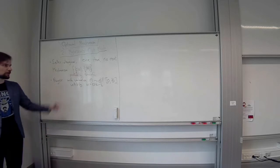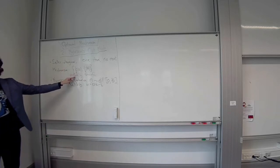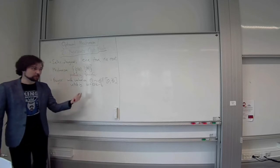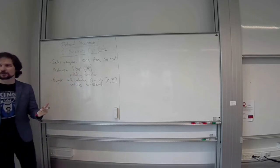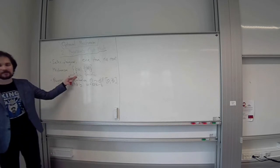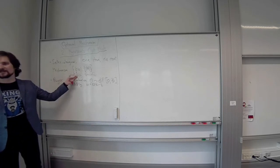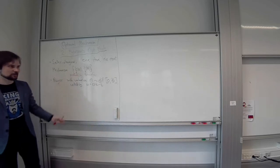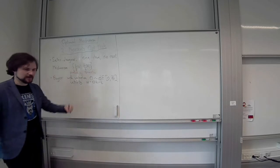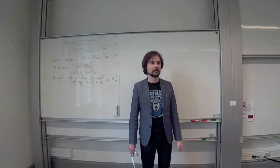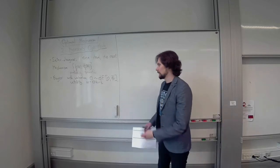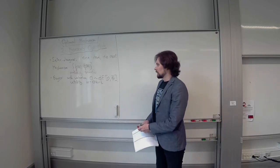The key point in this transition from quantities to probabilities: if both the seller and the buyer are risk neutral, these are the same thing. Getting half an item with probability one is the same as getting a whole item with probability 0.5. So this is the setup.